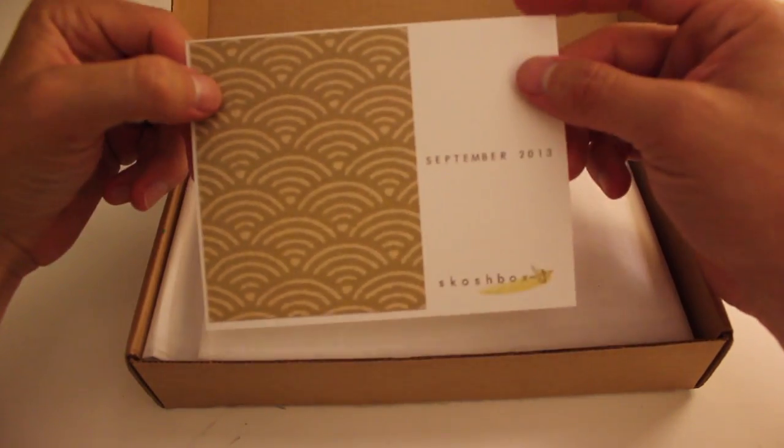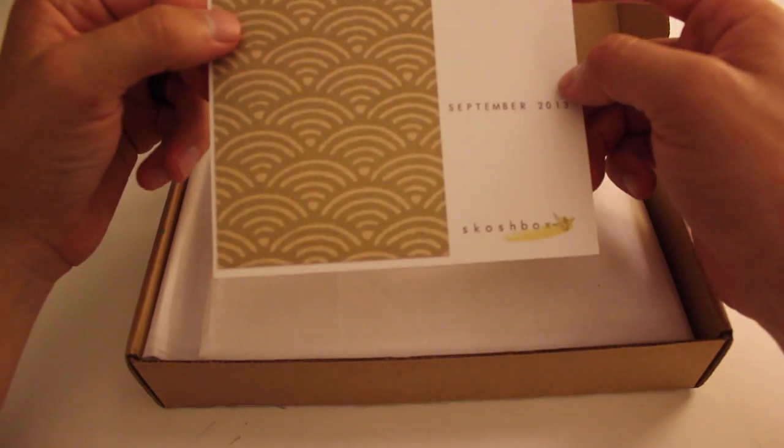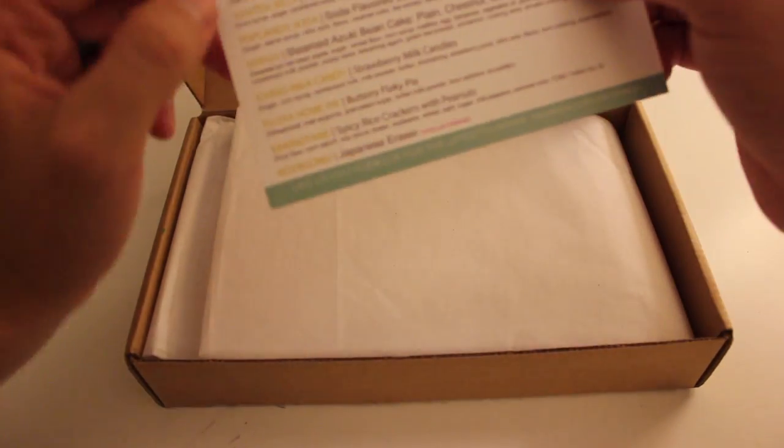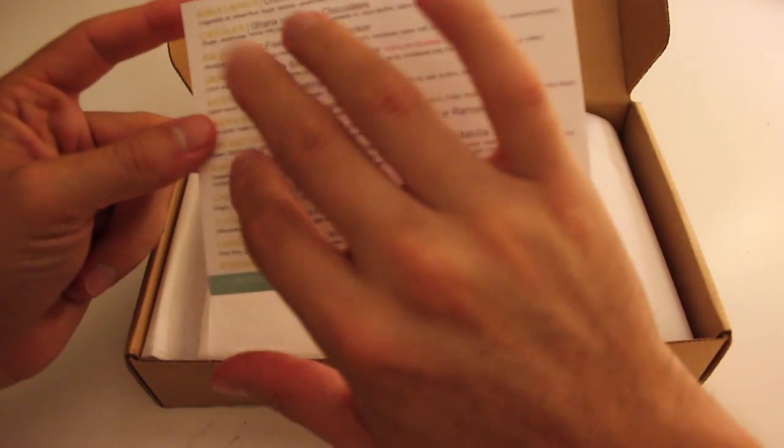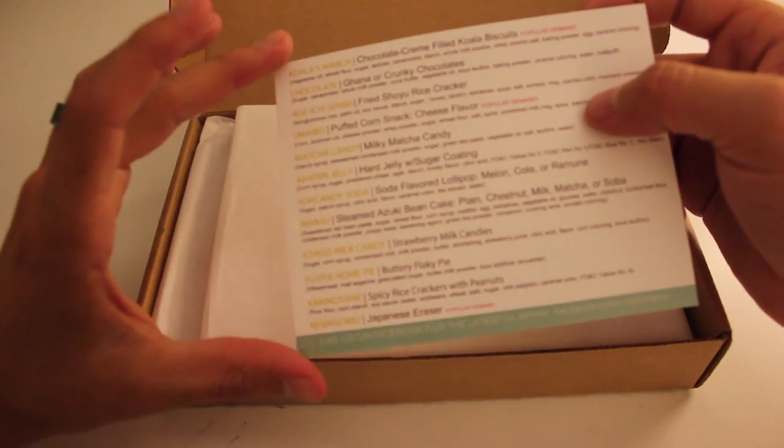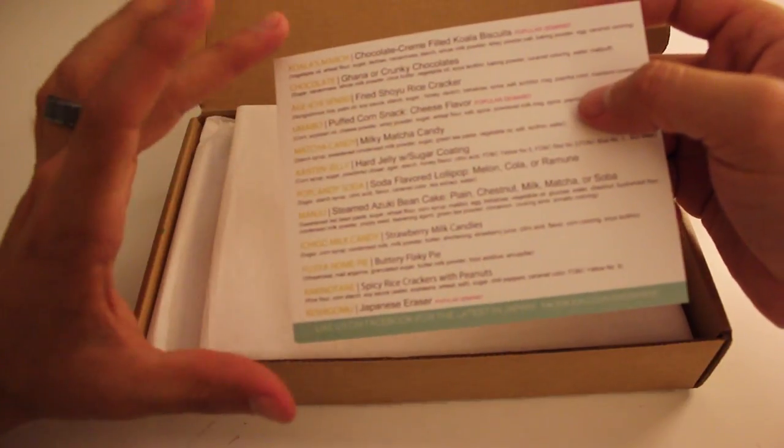Okay, so this is the September 2013 Scotch Box. Oh, awesome. So it looks like we get a description of all the different stuff in the box. Oh my gosh, there's so much stuff. I'm excited.